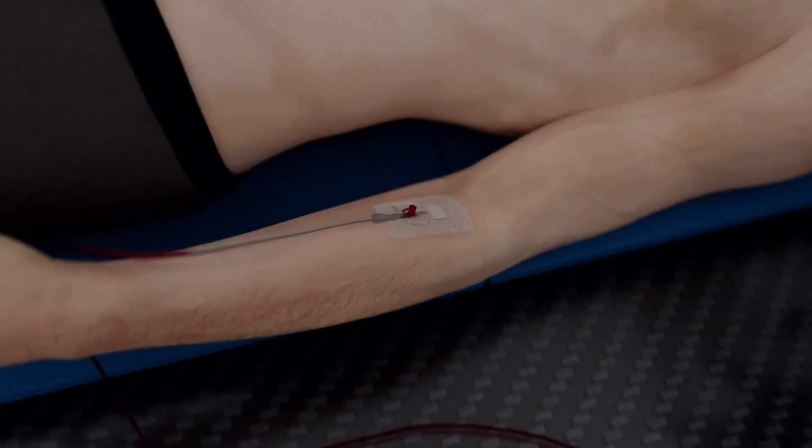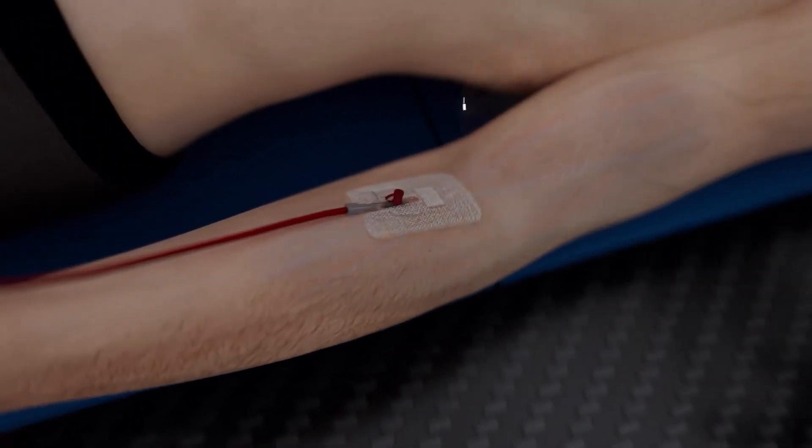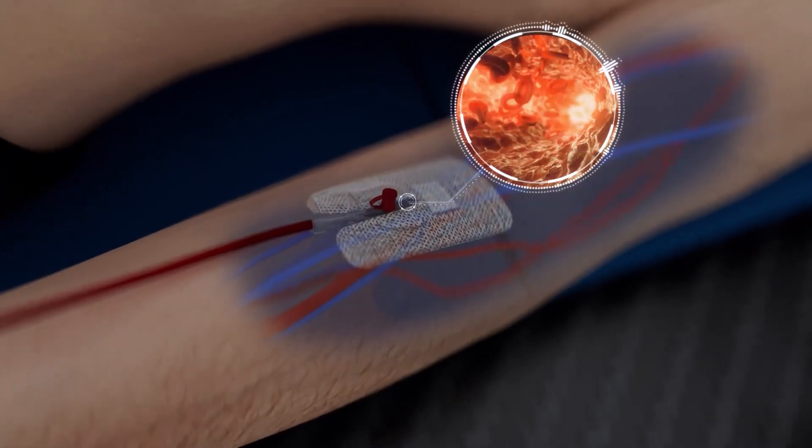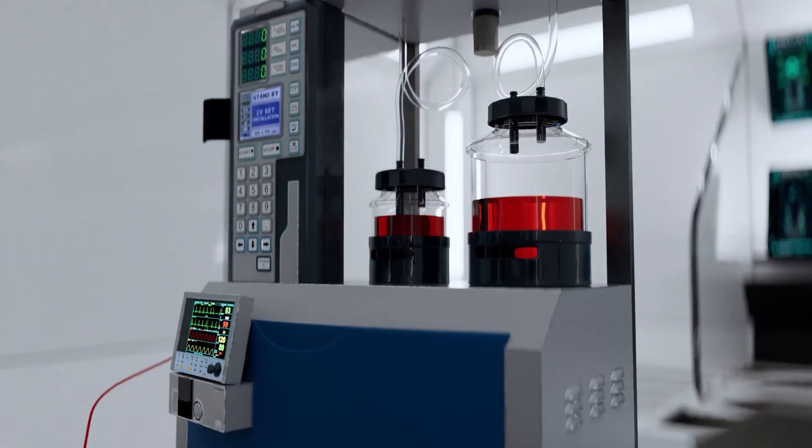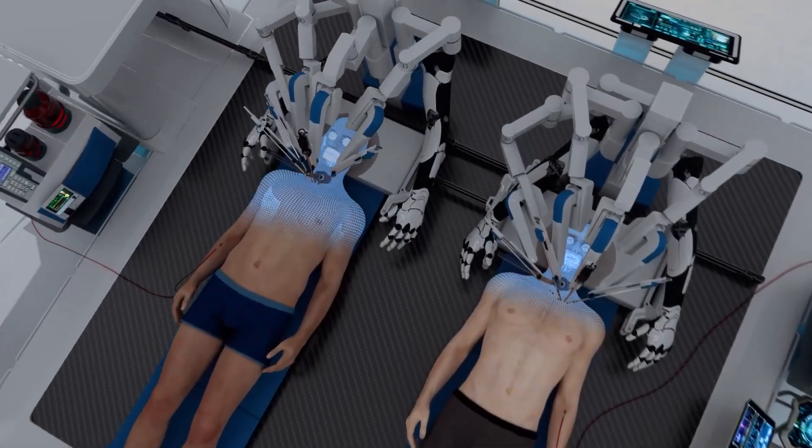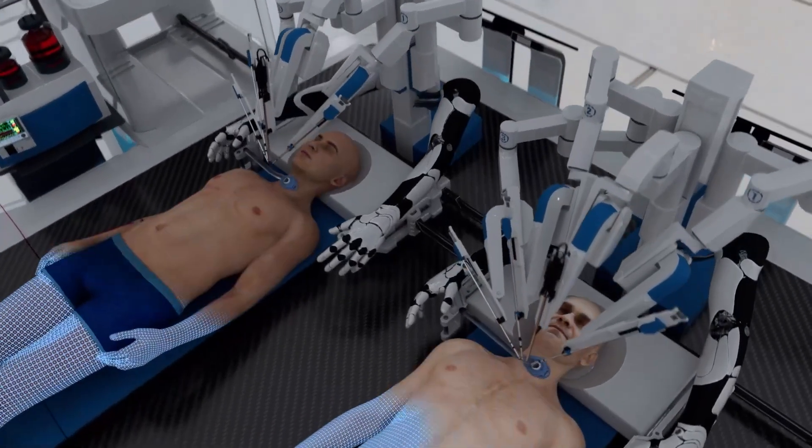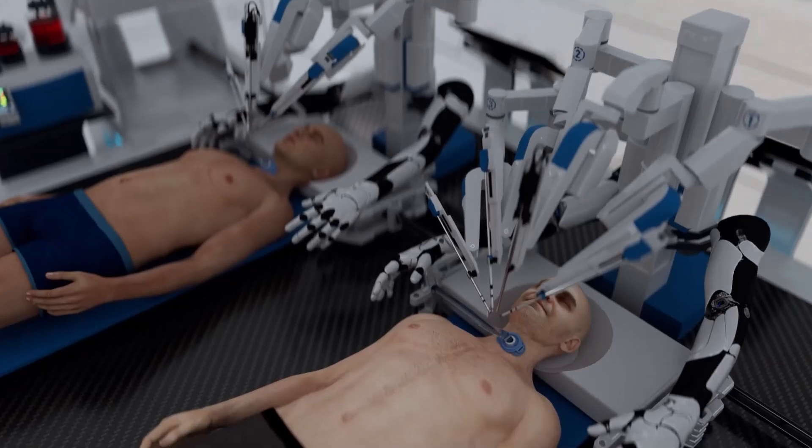Our proprietary artificial plasma solution keeps the brain and body oxygenated. The recipient's head and donor body are cooled to approximately 5°C to reduce potential brain damage. Advanced real-time imaging systems guide BrainBridge in separating the heads from the bodies while preserving the spinal cord and key blood vessels.